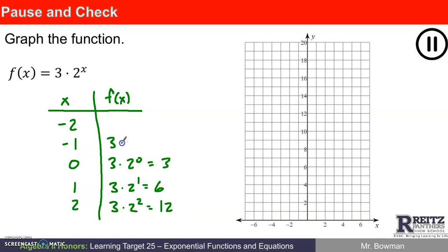When x is negative one, three times two to the negative first is three times a half, or three halves, or 1.5. When x is negative two, I've got three times two to the negative second. That's three times a fourth. That's three fourths.